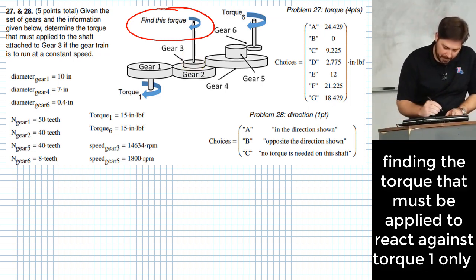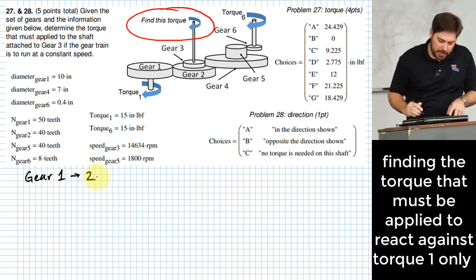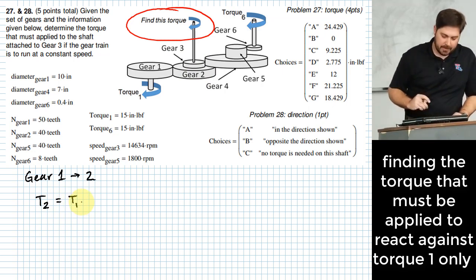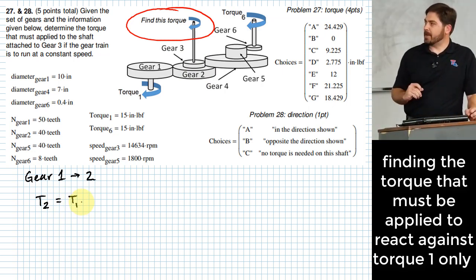Okay. So maybe I'll put a heading on this and say gear one to two. Okay. And we know torque one, right? So torque one is 15 inch pounds. And this is going to basically give me, if I use that, it should give me a torque on gear two. So torque on gear two will be torque on gear one. And what do I need to multiply by to make that happen?